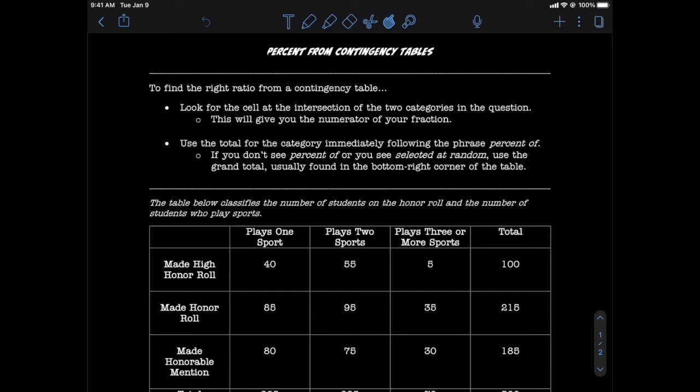Most problems asking you to find a percentage from a contingency table are going to ask you to compare a part to a total. Finding the correct part is intuitive. We understand that if we want to find something that shares two characteristics, we're going to look for the cell that lies at the intersection of the two categories.